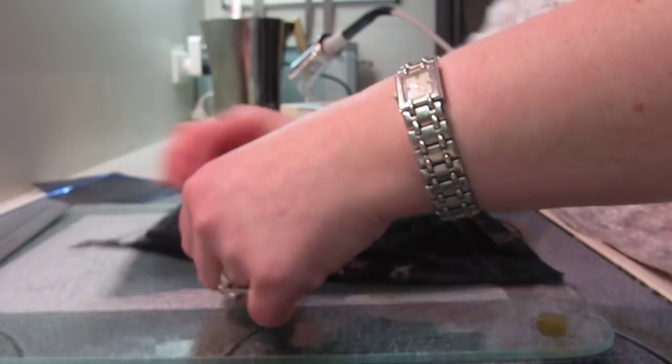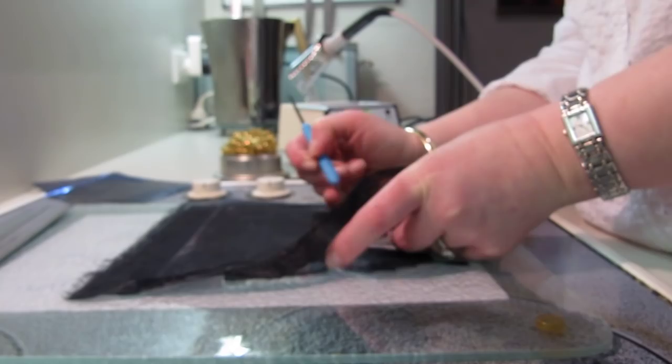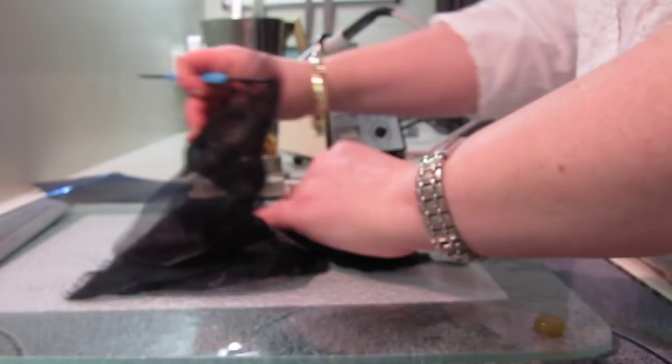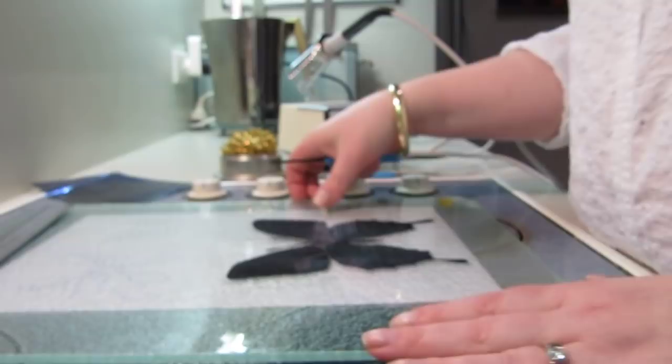And now I should be able to just remove this carefully. And I'm doing it quite carefully because some of these pieces are quite fine. And if they haven't cut through quite enough then I'd rather use a soldering iron again and just retrace around that part rather than risk ripping into the fabric. There you go. One butterfly.